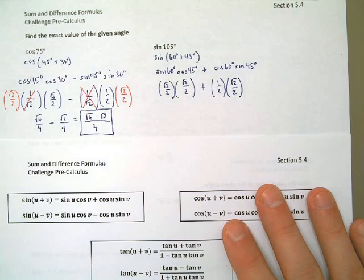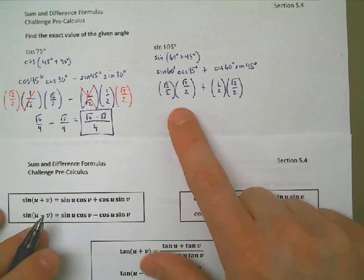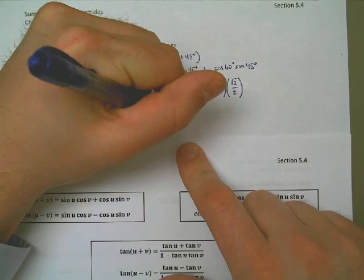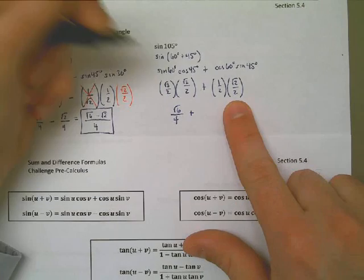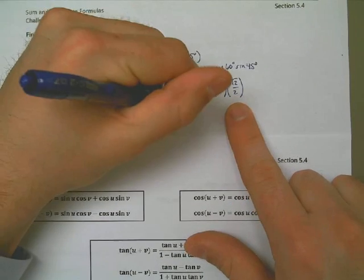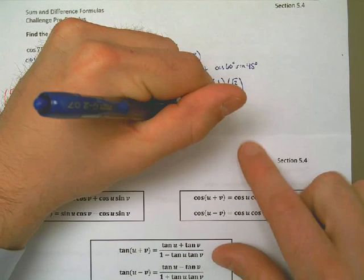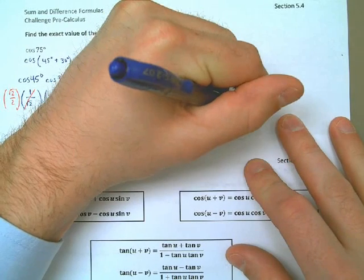So, now, to go to the final answer, I need to just multiply these out. On top over here, I have the square root of 3 times the square root of 2. That's the square root of 6. 2 times 2 on the bottom. 2 times 2 is 4. The right fraction, the right multiplication problem. I have 1 times the square root of 2 on top. And I have 2 times 2 on bottom. And it turns out, then, the answer for this one is the square root of 6 plus the square root of 2 all over 4.